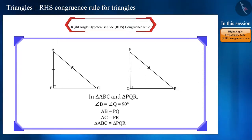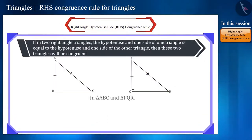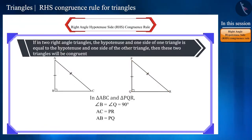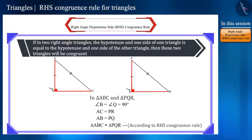This is a test for the congruence of triangles and we use this to verify the congruence of right angle triangles. We call this the RHS congruence rule. If in two right angle triangles the hypotenuse and one side of one triangle is equal to the hypotenuse and one side of the other triangle, then these two triangles will be congruent. Therefore, this is called the RHS congruence rule.